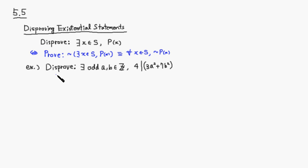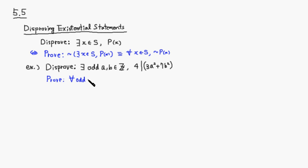So let's try to do that. Let's look at this example. We want to disprove: there exist odd integers a and b such that 4 divides 3a² plus 7b². So we want to prove the equivalent universal statement: for all odd integers a and b, 4 does not divide 3a² plus 7b². This is what we want to show.